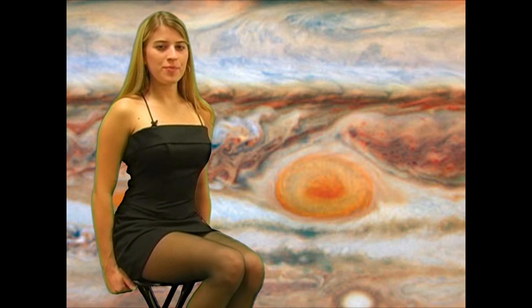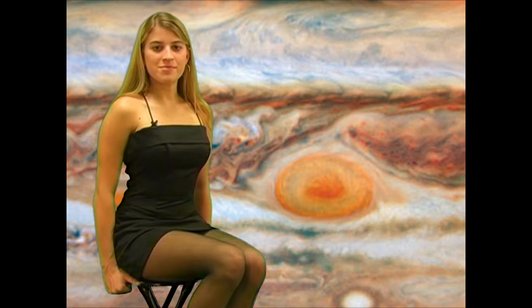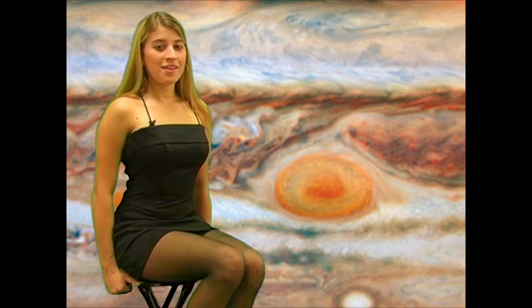You know that big red spot on Jupiter? That's actually a big storm, something like a cyclone or a hurricane, and that storm's been raging for over 300 years. The big red spot on Jupiter is twice the diameter of Earth. Imagine a storm big enough to swallow Earth whole.